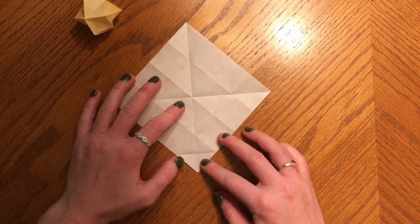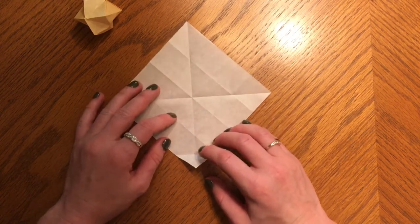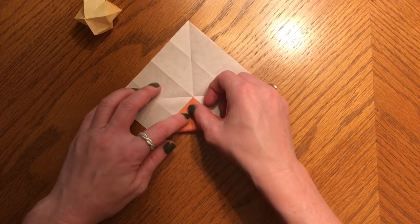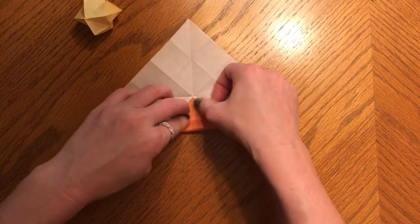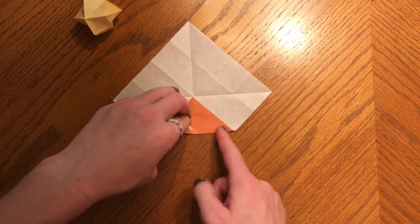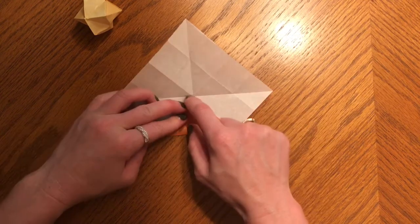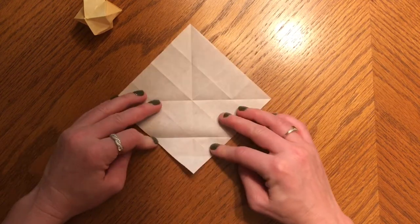And then you're going to unfold it. Then you're going to take this and fold it all the way to the center. So what we're doing right now is creating creases, that center area right there. Then unfold it.